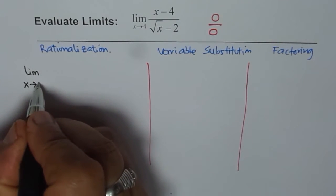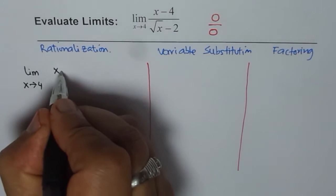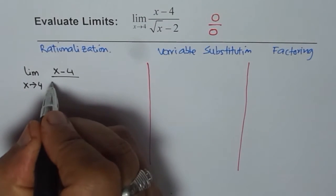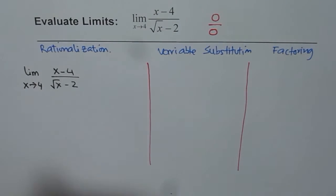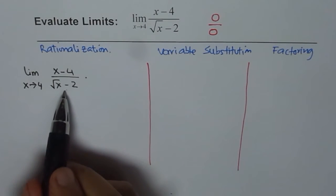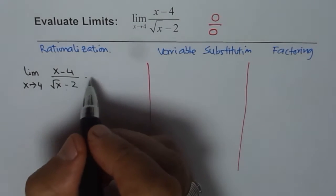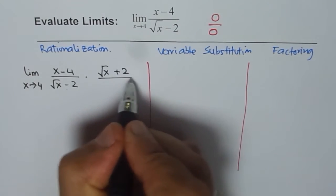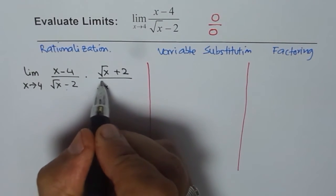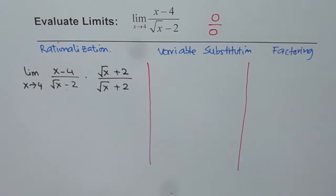Now let's see how to rationalize and get the answer. So we have limit as x approaches 4 for x minus 4 divided by square root of x minus 2. Now to rationalize, you have to multiply and divide by conjugate of this function.